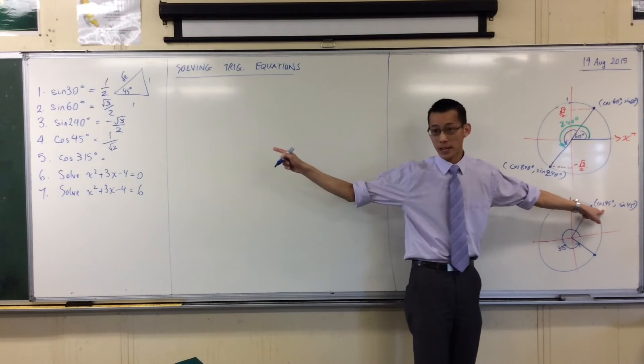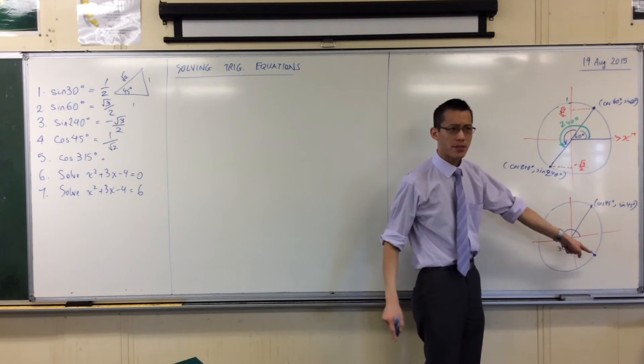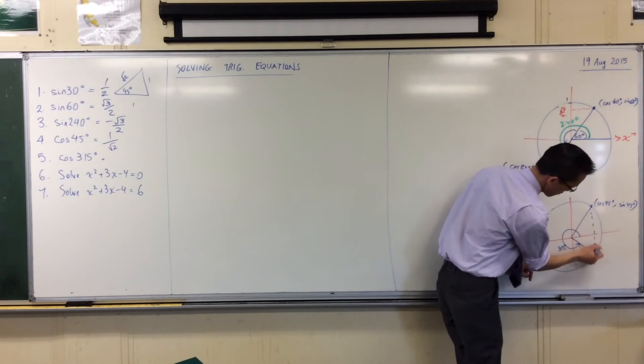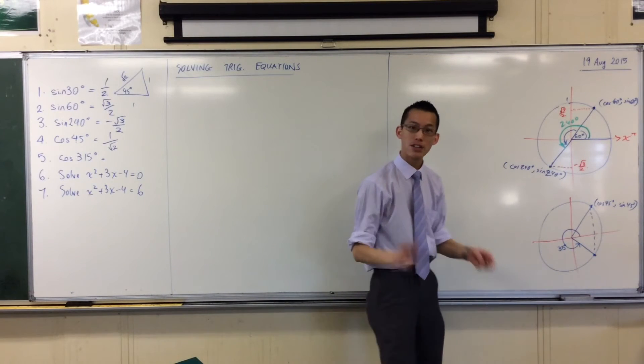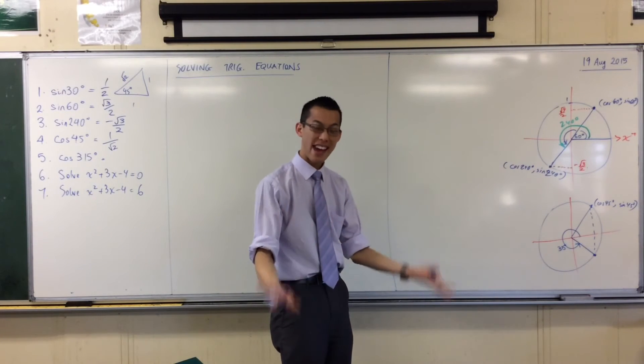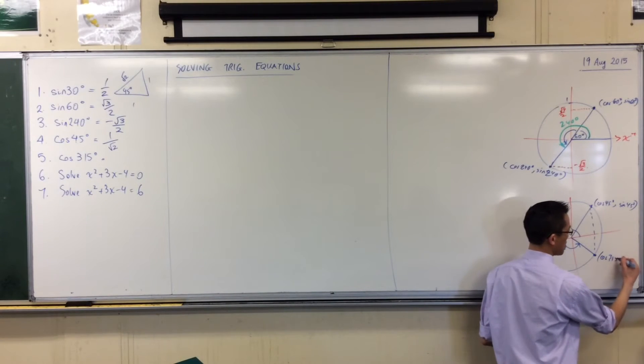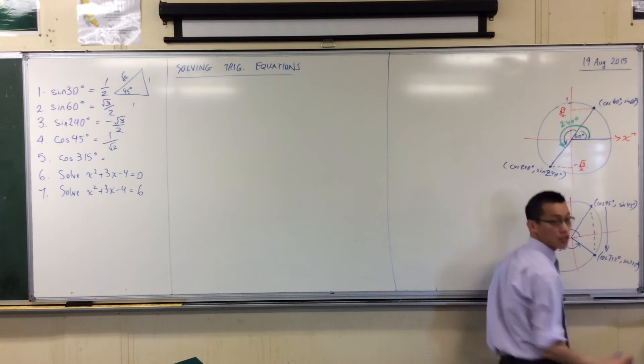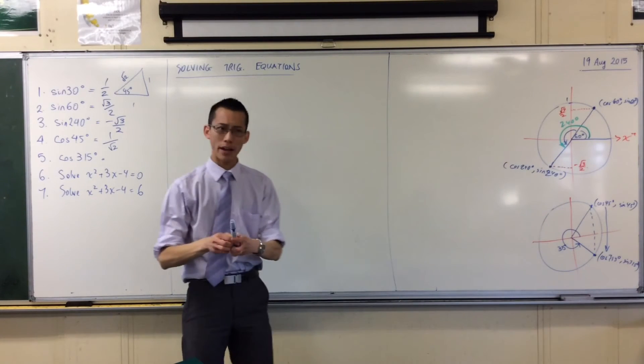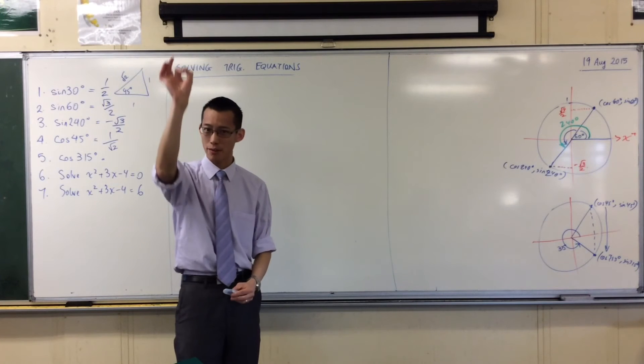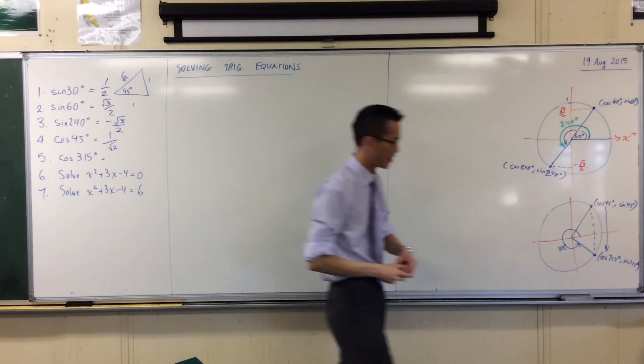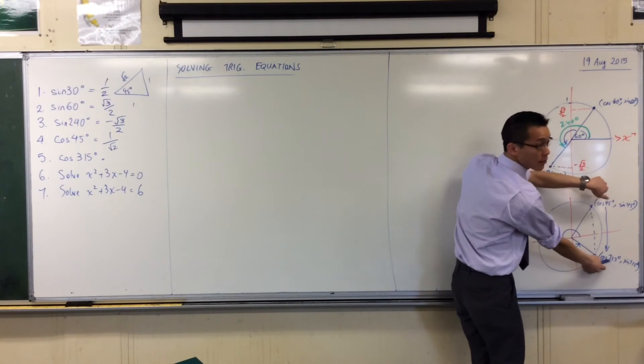So that guy's 1 on root 2. Where's 315? He's directly below. So he should share the same x-coordinate. This cos 315, sine 315, these guys should be identical. Any points on the Cartesian plane that are directly above one another, or below one another, they should share the same x value.